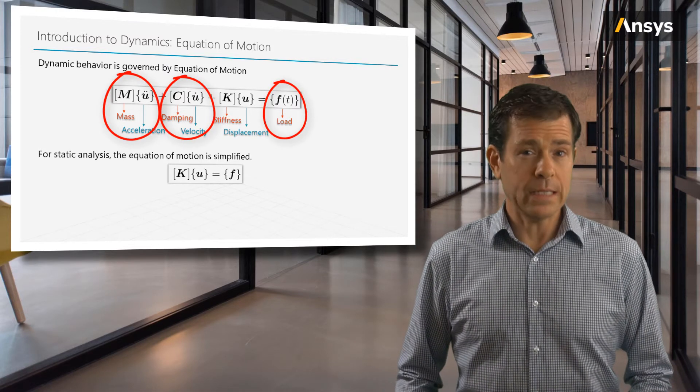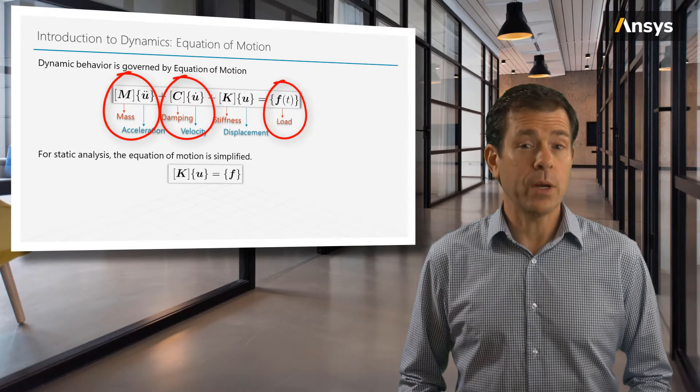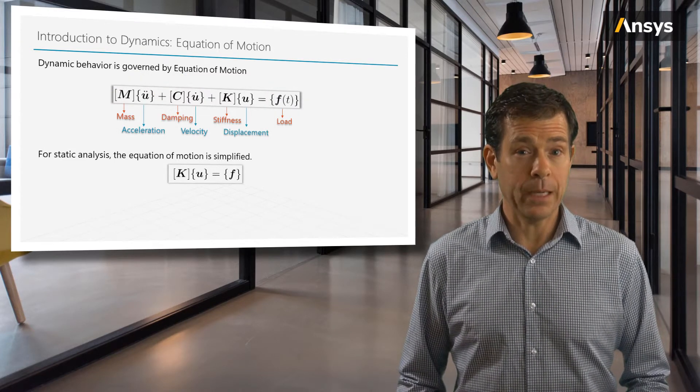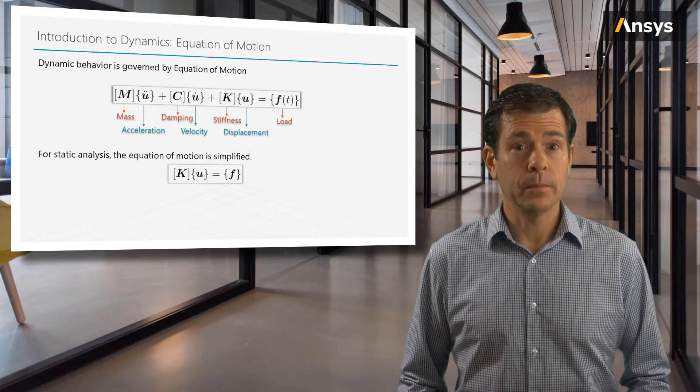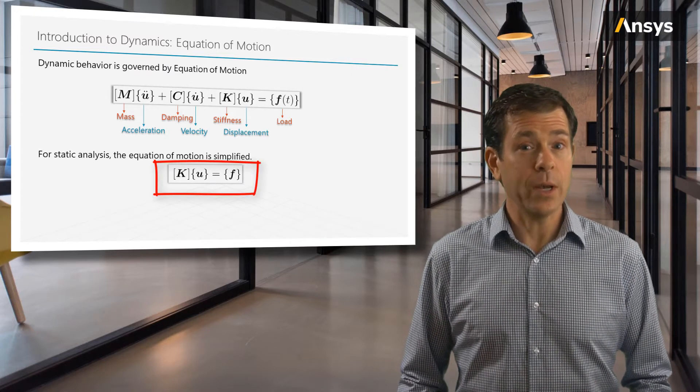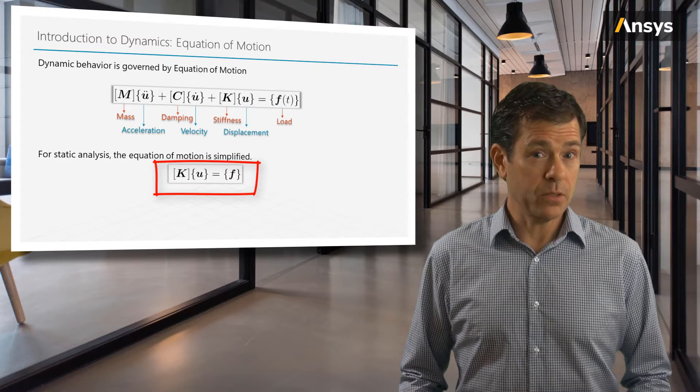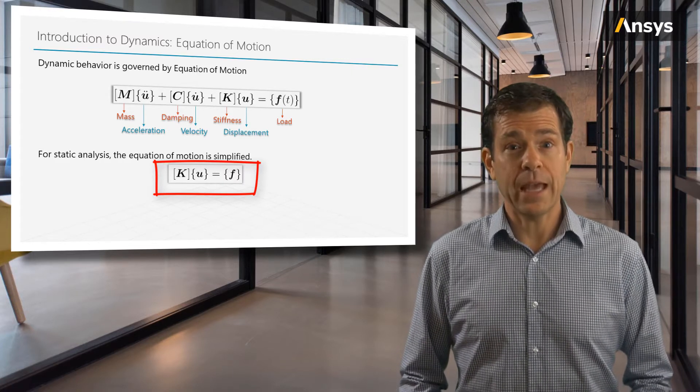But before we get into their details, let's have a look at the equations of motion. What happens if we remove the inertia and the damping, and the loads that vary with time? We end up with a simple equation we use in the static analysis that relates the displacements to the forces through the stiffness matrix K.